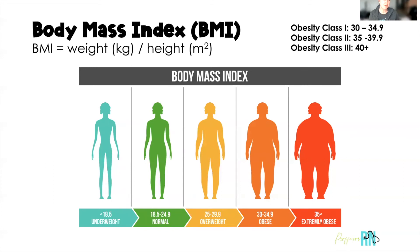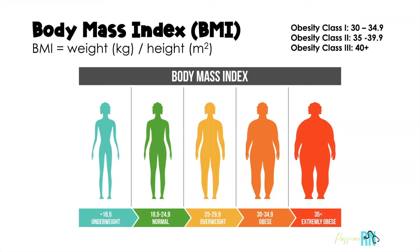Body mass index, or BMI, is used to classify nutritional status. Underweight is a BMI less than 18.5; normal BMI is 18.5 to 24.9; overweight is 25 to 29.9; and obese starts at a BMI of 30. There are classes of obesity: Class 1 is 30 to 34.9, Class 2 is 35 to 39.9, and Class 3 is 40 or above. Clients tend to be considered morbidly or extremely obese when their BMI is greater than 35.